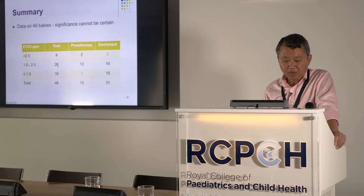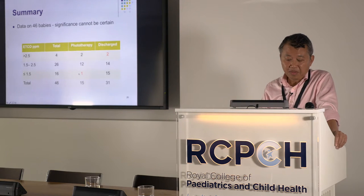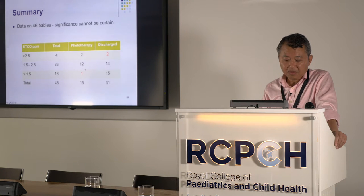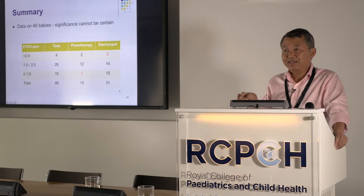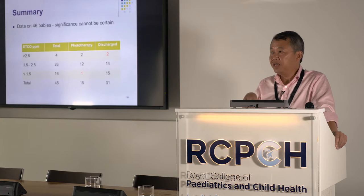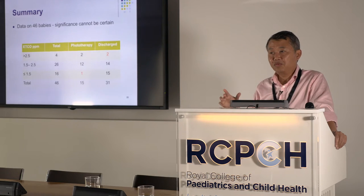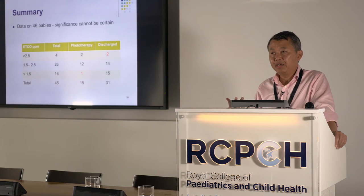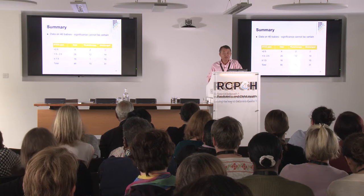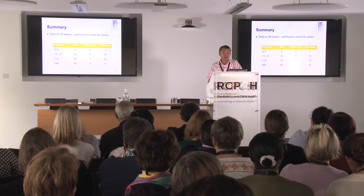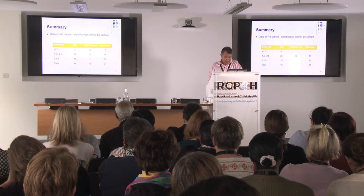In total, four babies had ETCO above 2.5 — two requiring phototherapy and two discharged, which I'll discuss in a moment. The medium-risk group of 1.5 to 2.5 had the most babies, and 16 were below 1.5, of whom nearly all were discharged. We need to understand that the denominator here differs from other studies, as these babies were already clinically jaundiced and referred back with a transcutaneous reading above 200.